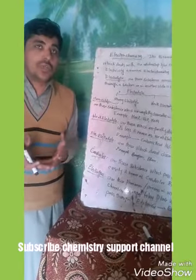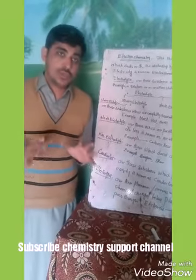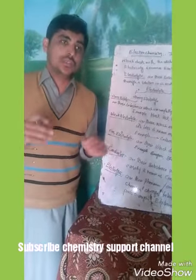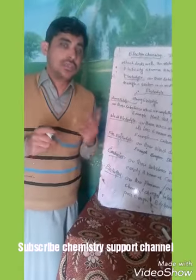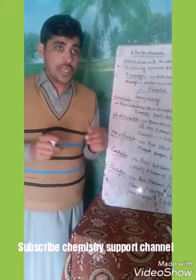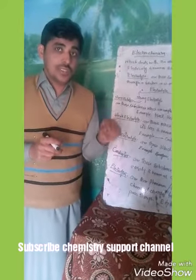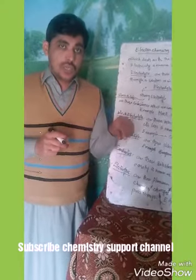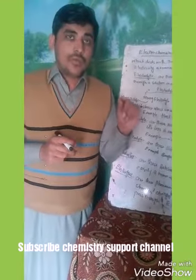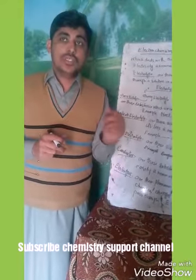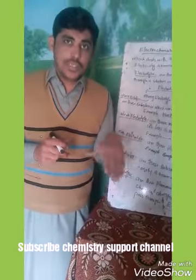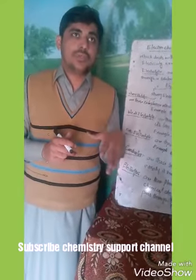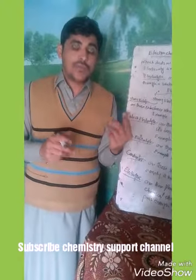Strong electrolytes are those substances which are completely dissociated in water. For example, when HCl or sodium chloride dissolves in water, it completely dissociates into positive and negative ions. So it is a strong electrolyte.